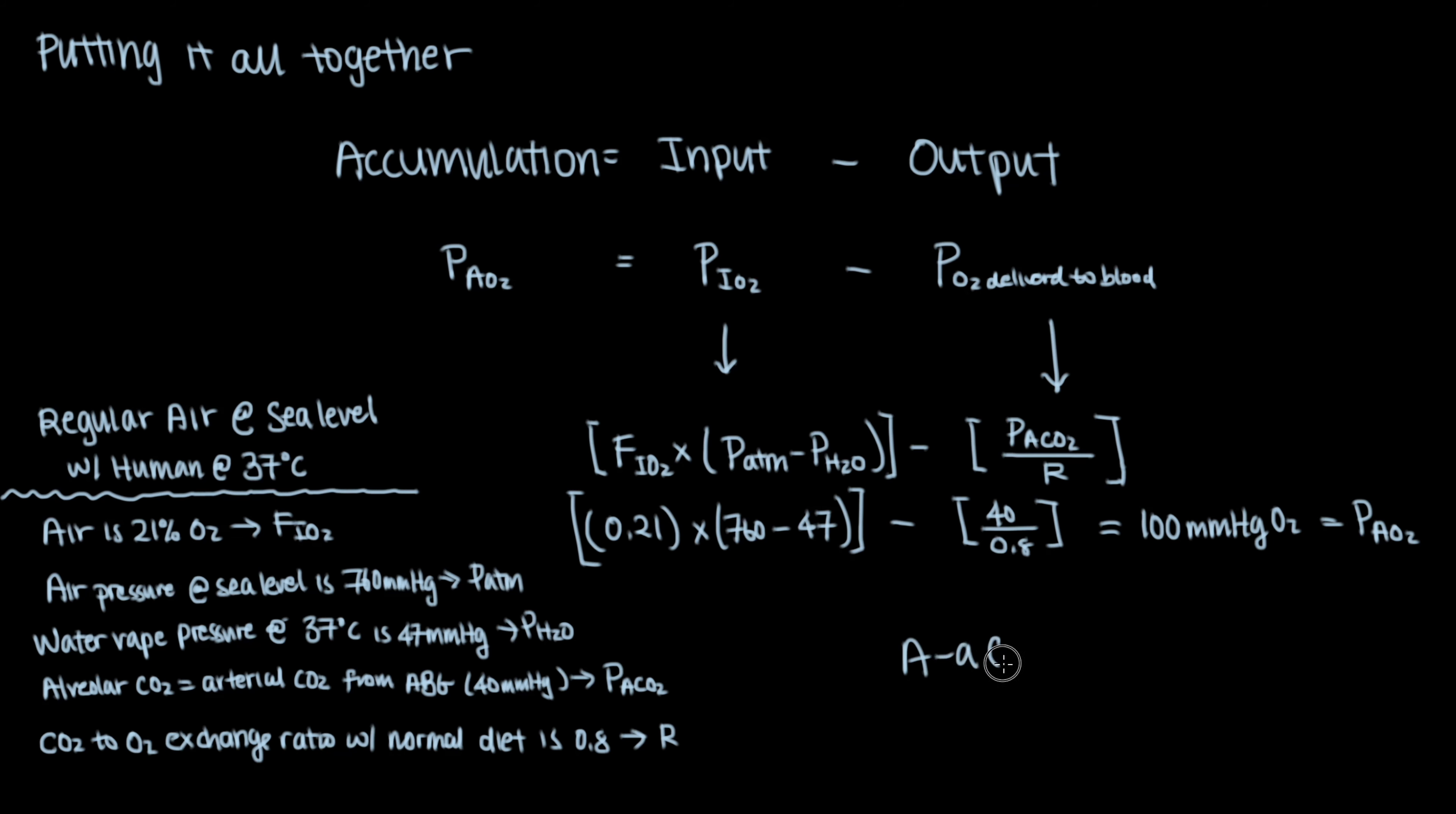Now as mentioned before, the AA gradient in a normal individual is about 10 mmHg. And this is due to a couple of things happening in the normal physiology in our respiration called Ventilation Perfusion Mismatch or VQ Mismatch, which we will discuss in another video. The link is in the description.